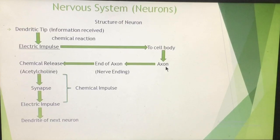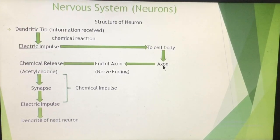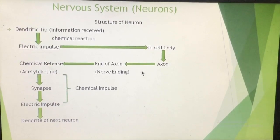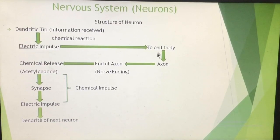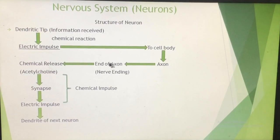The axon is a long fiber — dendrites are also fibers but they are very short tree-like structures, whereas the axon is a long fiber and there is only one axon per neuron. The function of the axon is to take the nerve impulse or electric impulse from the cell body. At the end of the axon, nerve endings are present. The axon is one, but it ends into many nerve endings.